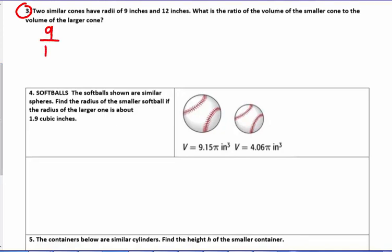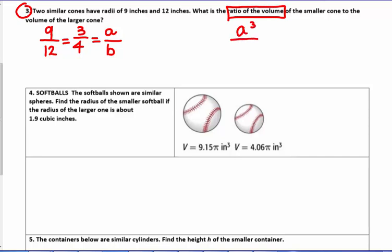In example three, two similar cones have radii of nine and twelve inches, so their similarity ratio or scale factor is three to four. To find the ratio of the volumes, we cube the scale factor: a cubed over b cubed equals three cubed over four cubed. Three cubed is 27 and four cubed is 64, so the ratio of the volumes is 27 to 64.